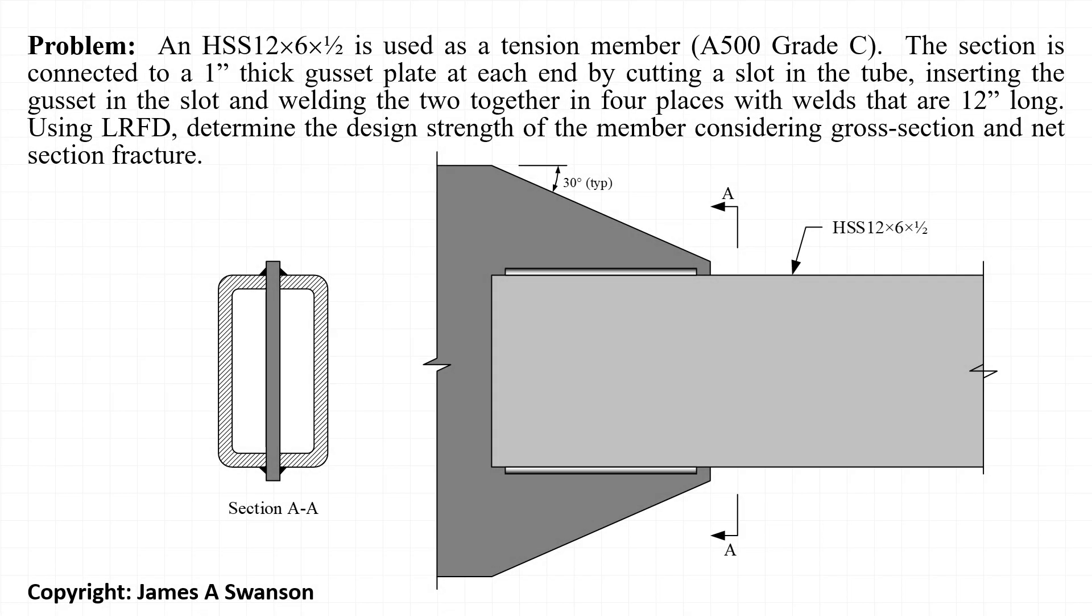In this example, we're going to be looking at the strength of an HSS 12 by 6 by half that's used as a tension member. The HSS is slotted at its end and fit around a concentric gusset plate and welded with four 12-inch long fillet welds. The tube is made out of A500 grade C steel. Let's get started.